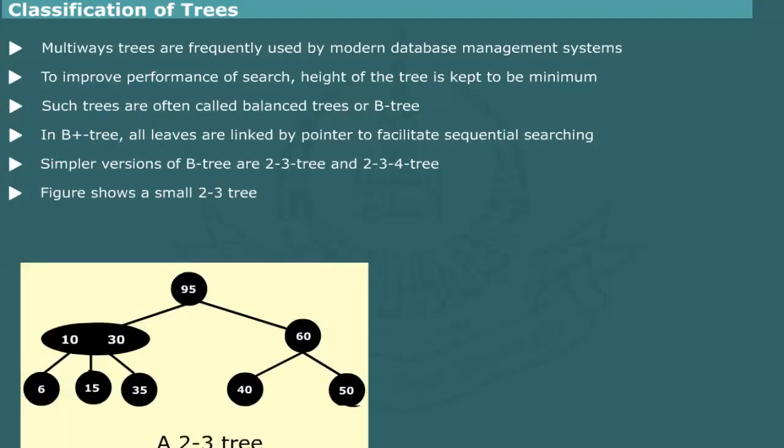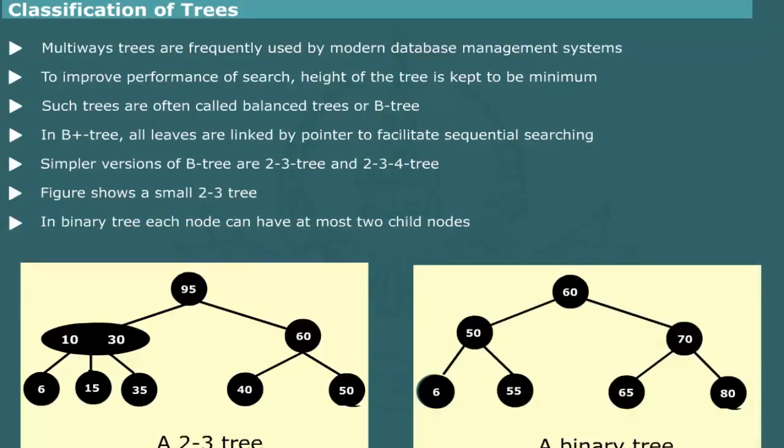A binary tree is the simplest form of tree data structure. In this structure, each node can have at most two child nodes. We shall study in great detail the binary tree structure in the subsequent section of the unit. For now, let us briefly look at some of the applications of binary trees.